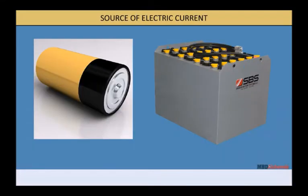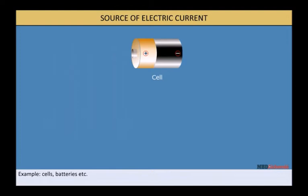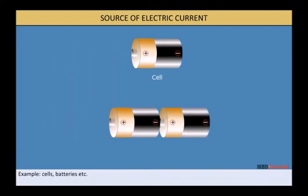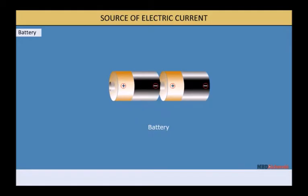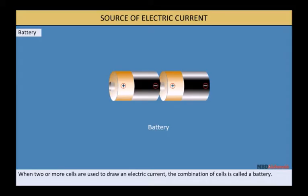Source of electric current: A device that produces an electric current is called a source of electric current. Cells, batteries, etc. When two or more cells are used to draw an electric current, the combination of cells is called a battery.